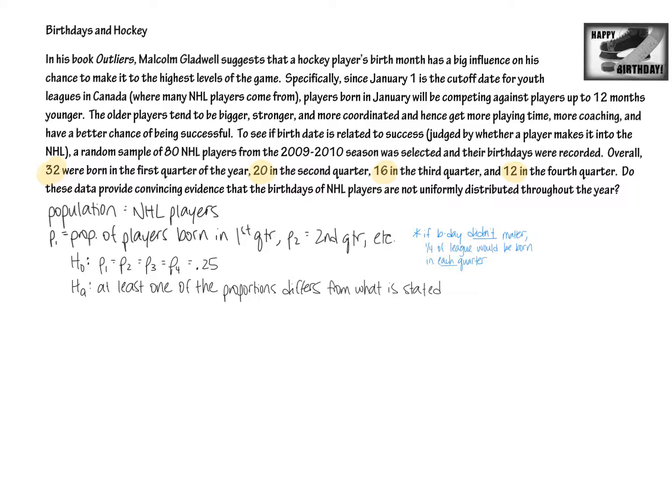So remember we have these numbers here that we're testing, and if it didn't matter when you were born, wouldn't a fourth of the NHL players be born in the first quarter and a fourth of them be born in the second quarter, etc.? And if it would be even or uniformly distributed, that's going to be my H0 for this problem. I'm going to pause and write it out. All right, so here I've written a few things out. I've got my H0. And so remember, we're kind of contradicting what's up here, not uniformly distributed. That's what I'm testing. So therefore, I'm assuming that it is uniformly distributed or equal within each category or each proportion is 25%. And I wrote a little note here, if the birthday didn't matter, then a fourth of the league should be born in each quarter. That's going to be my null hypothesis, and that's what I'm assuming is true. What I'm trying to prove is that something is different. At least one of the proportions, that's how you do the Ha for a chi-squared goodness of fit test, at least one of the proportions differs from what is stated. And by stated, we're meaning stated here in the H0.